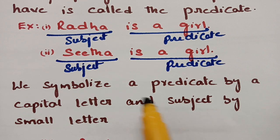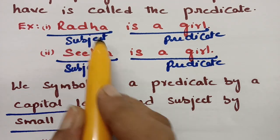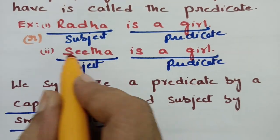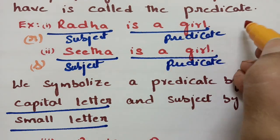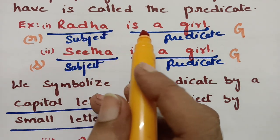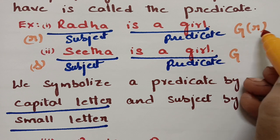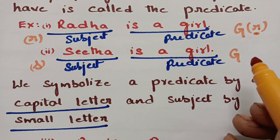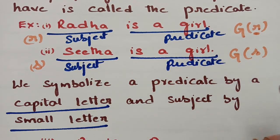We symbolize a predicate by a capital letter and a subject by a small letter. So Radha is written with small 'r', Sita with small 's'. The predicate 'is a girl' is represented by capital G. Therefore, 'Radha is a girl' is written as G(r), and 'Sita is a girl' is written as G(s).